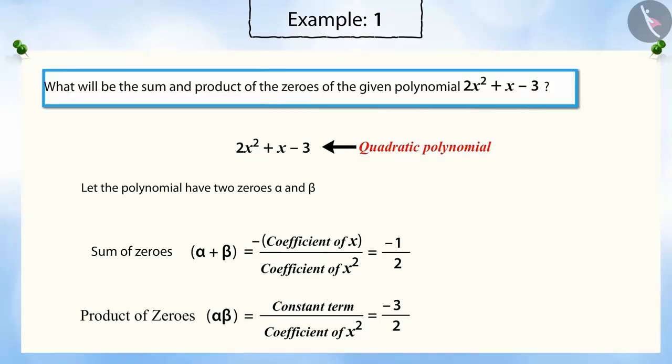So, in this way, we can find the sum and product of zeros of the given polynomial. Let us see another example.